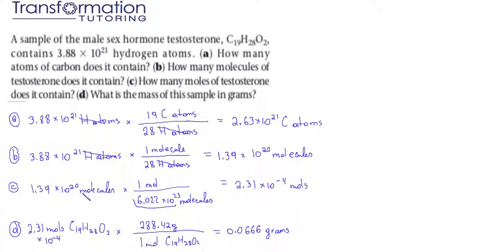Since molecules is on top, I put molecules on the bottom to cancel it, and moles on top because that is the unit I am looking for. Thanks to Avogadro's number, 1 mole of testosterone contains 6.022 times 10 to the 23 molecules. My molecules will cancel, and when I plug it into my calculator, I get 2.31 times 10 to the negative 4 moles of testosterone.